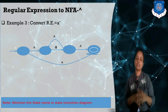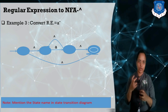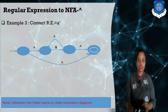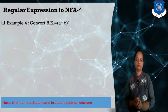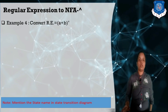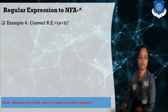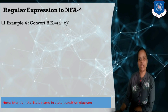You have to remember these three basic structures: how to perform concatenation and construct NFA-null, the union operation and construct NFA-null, and Kleene star. In an exam, they give complex expressions. If you know these three basic structures, you can draw NFA-null for any given regular expression. Suppose they have given (A+B)* and we need to construct the NFA-null for this.